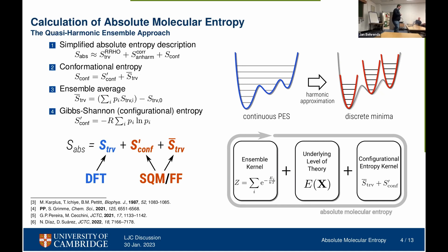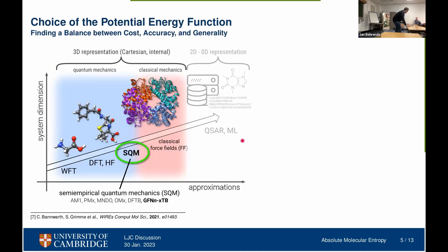One thing our approach distinguishes from the other two papers is that on top of the scheme we employ a multi-level modeling strategy. Only for the global minimum do we use a DFT-level calculation to obtain the translational, rotational, and vibrational entropy. For the conformational term we employ a cheaper semi-empirical or force field level. The motivation is finding a balance between cost, accuracy, and generality, since in the end we are performing thousands to millions of energy and gradient evaluations.